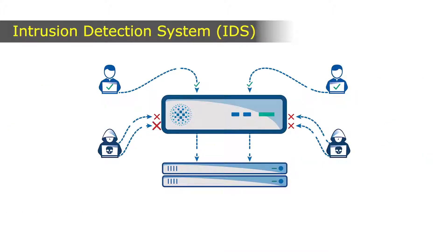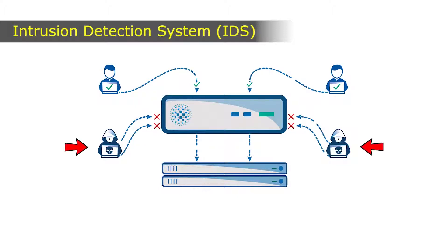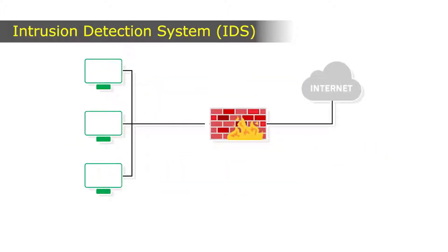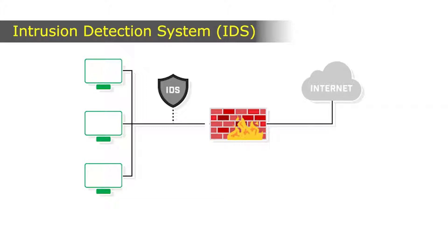However, some intrusion detection systems are capable of taking actions when malicious activities are detected, like blocking the traffic sent from suspicious IP addresses. IDS should be placed at the gateway at the entry point of the internet. You can see the placement of an IDS in the figure.